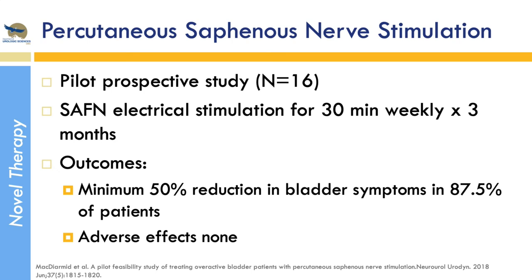Percutaneous saphenous nerve stimulation has also been looked at, with very similar protocols — 30 minutes for about 12 weeks. It had similar reduction in symptoms with no adverse effects. It's hard to think of many reasons to choose one nerve over the other, but it represents another pathway that can be used.